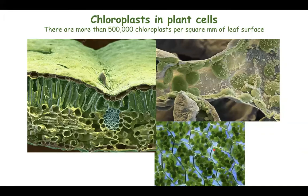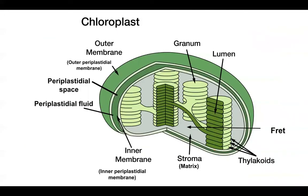That is why leaves are the best suited structure for photosynthesis. Before you proceed, you need to know the structure of a chloroplast. Chloroplasts are loosely called as the kitchen of the cells because they perform photosynthesis. These chloroplasts have a double membrane structure — the outer membrane, called the outer periplastidial membrane, and the inner membrane, called the inner periplastidial membrane. These two membranes are separated by a periplastidial space which is filled with a periplastidial fluid.